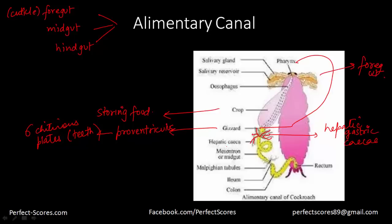The midgut, also known as the mesenteron, begins after the hepatic caeca. At the junction of the midgut and hindgut, there is a ring of 100 to 150 yellow-colored tubules known as malpighian tubules, which help remove excretory products from the hemolymph — the circulatory fluid. The hindgut is broader and differentiated into three parts: the ileum, the colon, and the rectum. The rectum opens outside through the anus.